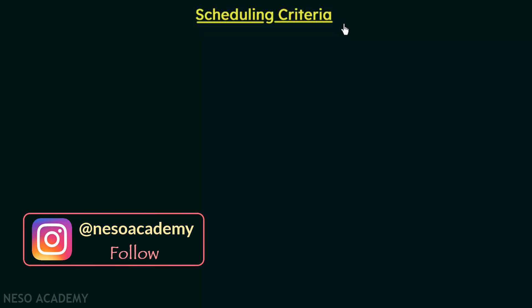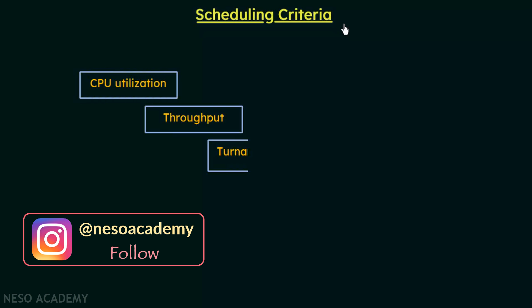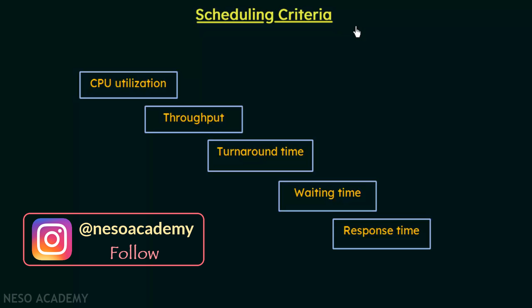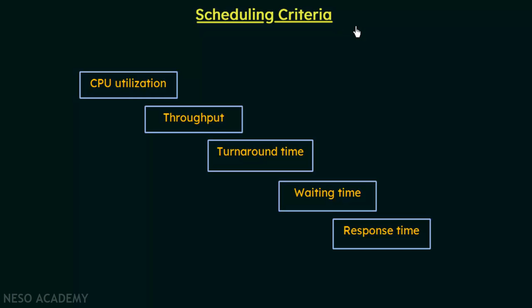In this lecture we are going to discuss scheduling criteria. Before we start studying different scheduling algorithms, we need to know about the different scheduling criteria based on which we can compare them and find out the efficiency of a particular algorithm. These are the five scheduling criteria that will help us determine the efficiency of a particular scheduling algorithm.